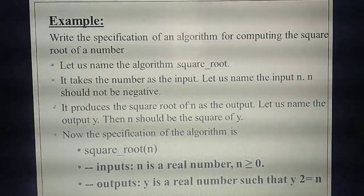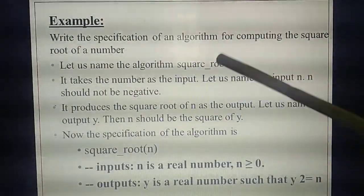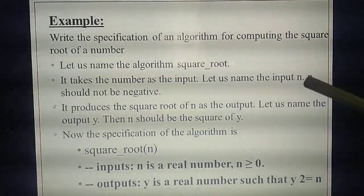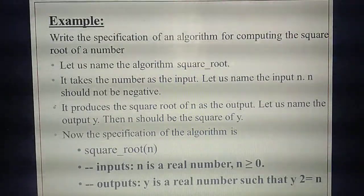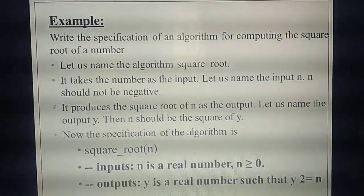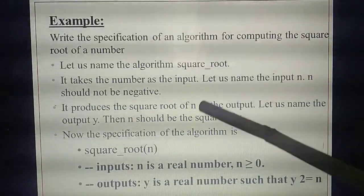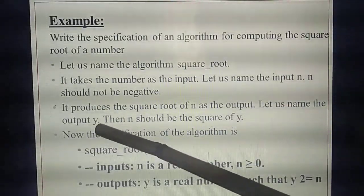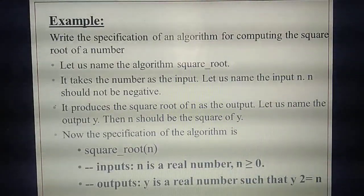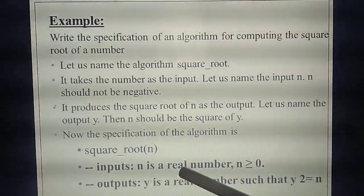So what are the things studied here? Specification algorithm: first, name the algorithm — 'Square Root.' Then give the input — variable N. Then give the property of the input — N should not be negative. Then identify the output — variable Y stores the result. The squaring result is stored in Y. Now we write this as an algorithm.